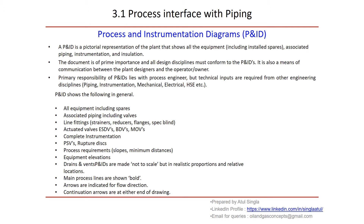In detail, P&IDs show the following: general information, all equipment including spares, associated piping including valves, line fittings, strainers, reducers, flanges, spectacle blinds, actuated valves, complete instrumentation, PSVs, process requirements — if any slope or minimum distance is required that has to be covered in notes and be part of P&ID — equipment elevations, drains and vents. P&IDs are not made to scale but in realistic proportion and relative locations. Main process lines are shown as bold, and arrows indicate flow direction with continuation arrows at either end. P&IDs become the basic document for all disciplines; we take MTO based on information provided here at the initial stage of the project. P&IDs are the starting point for all engineering design.